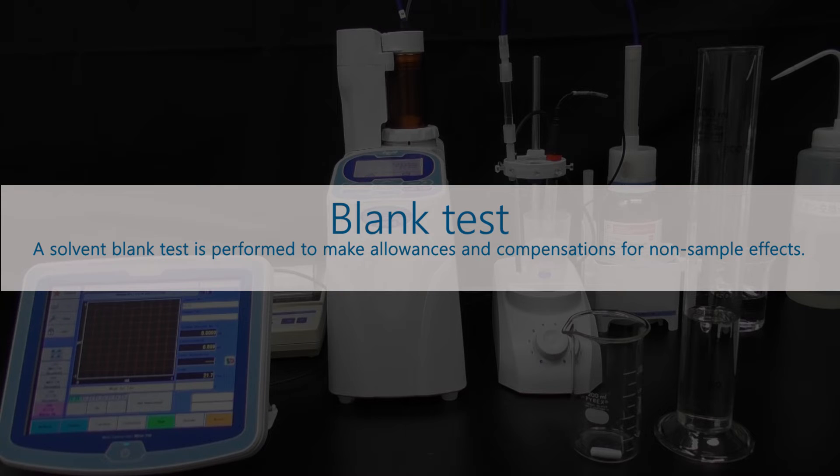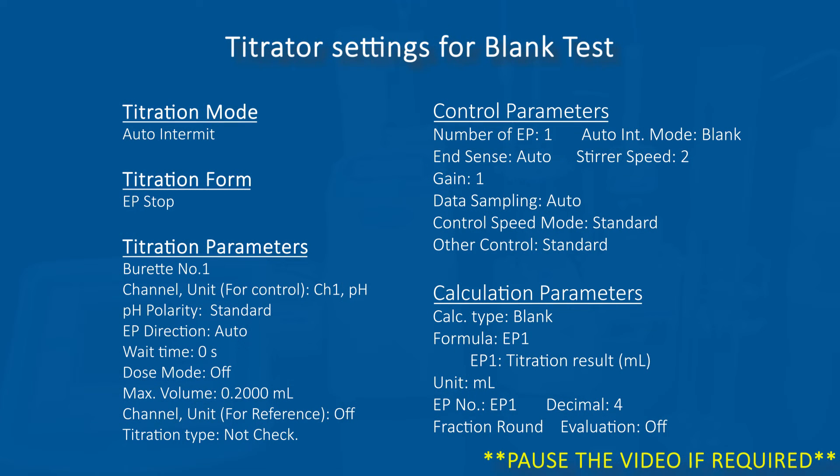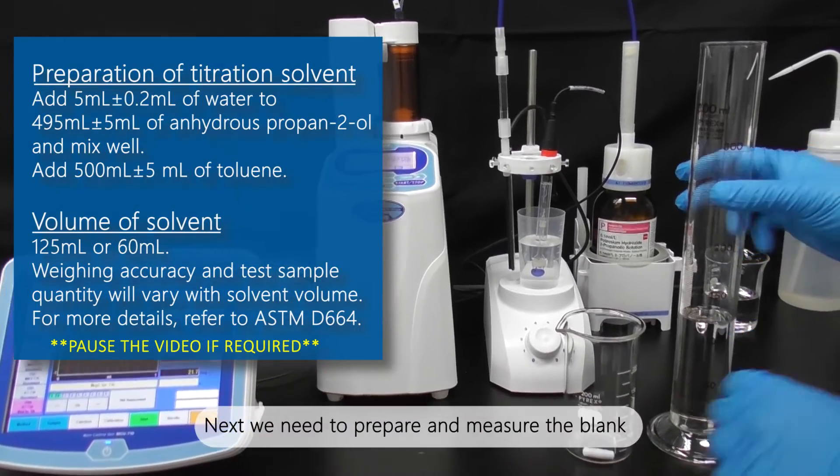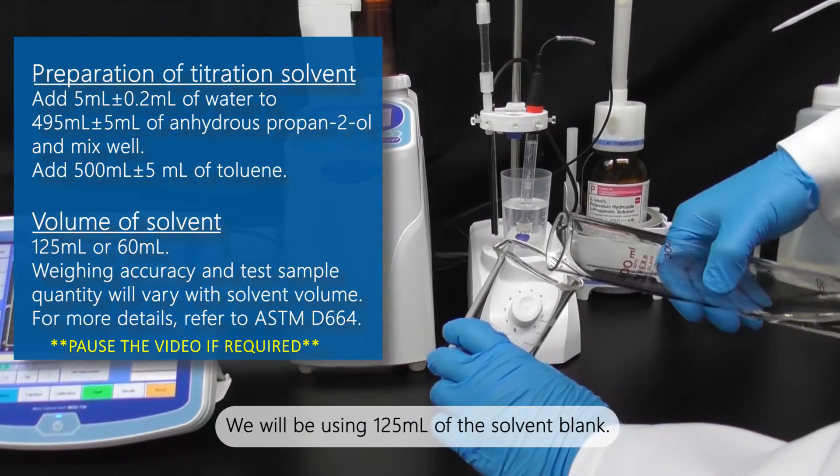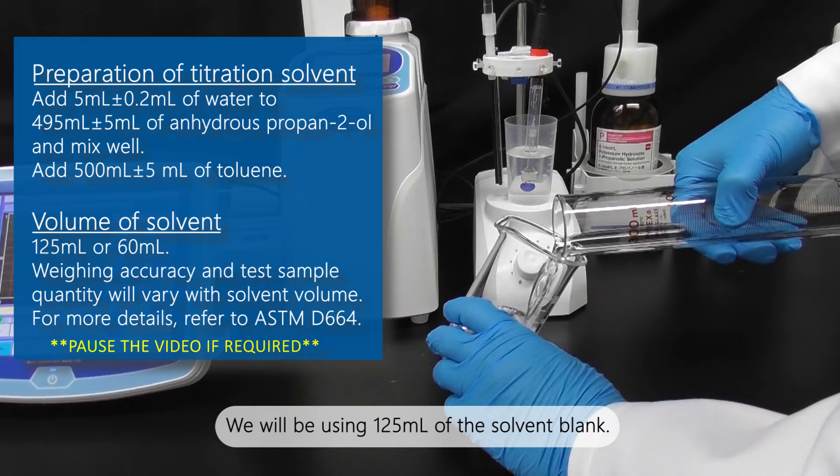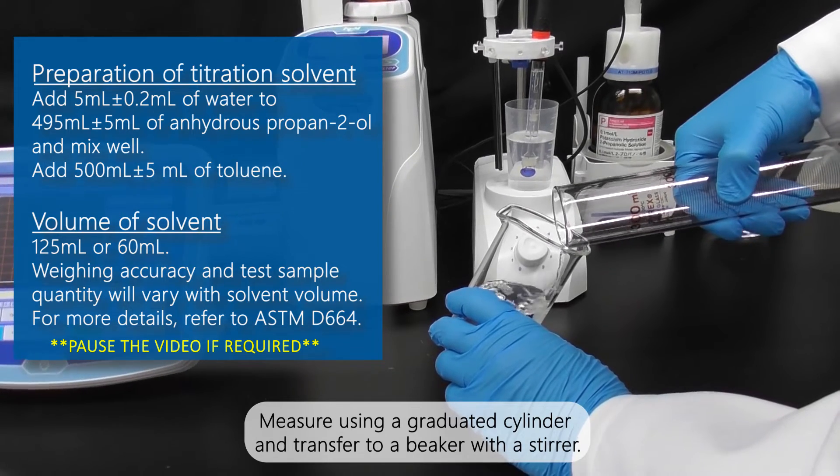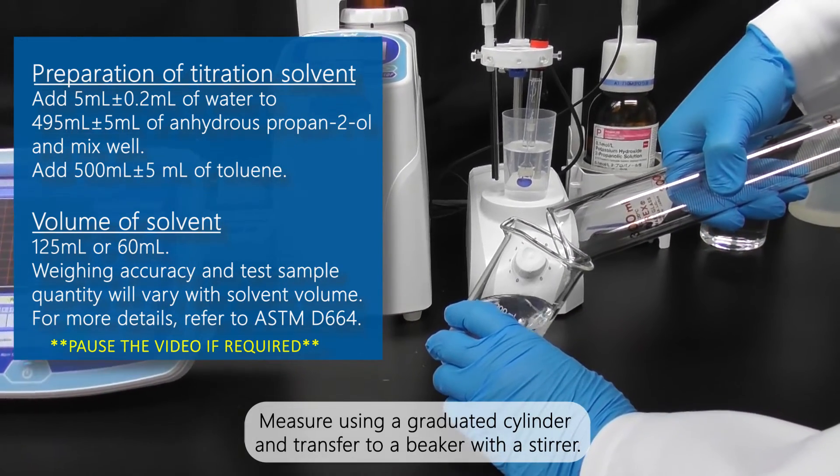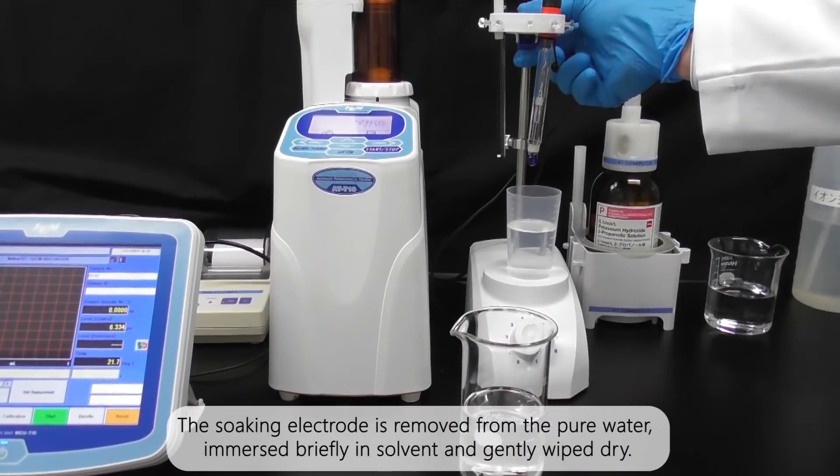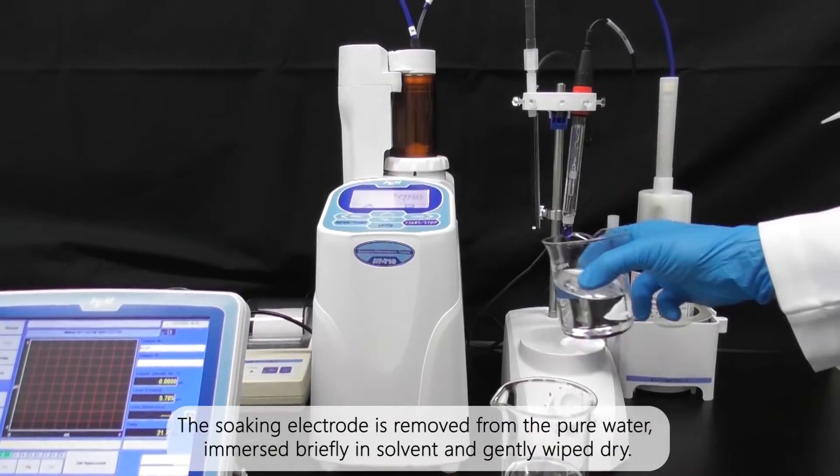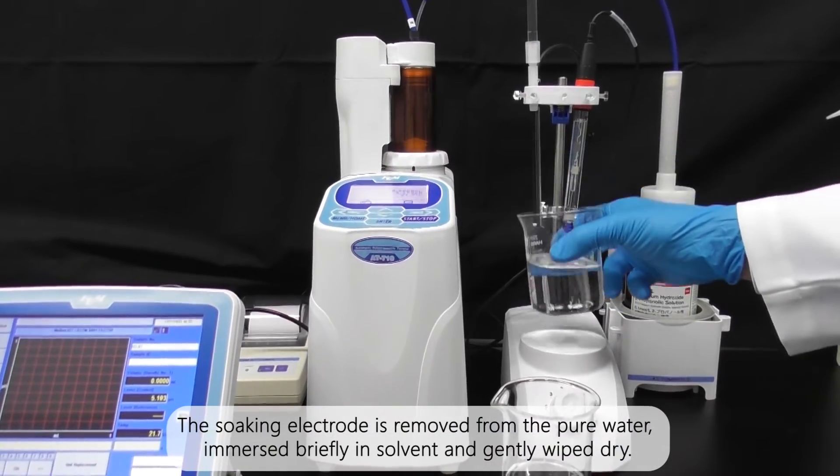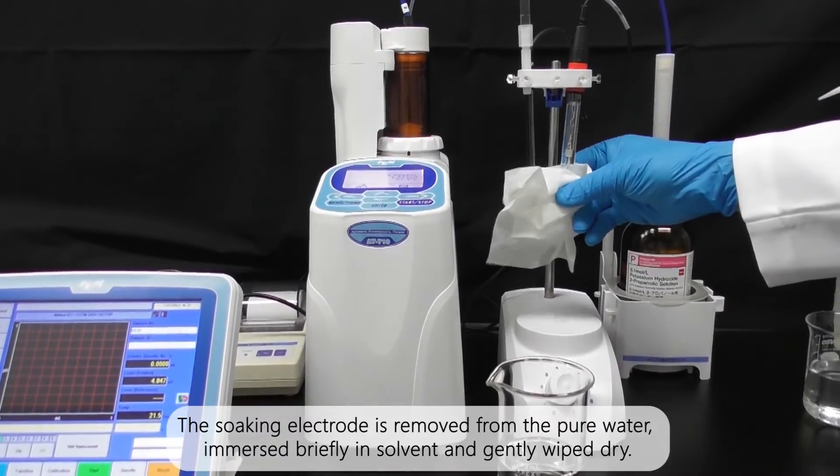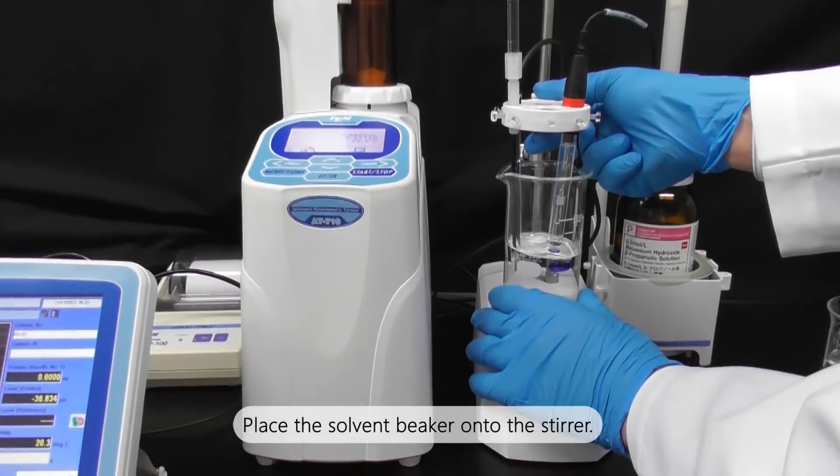Blank test: Next, we need to prepare and measure the blank. We will be using 125 mL of the solvent blank. Measure using a graduated cylinder and transfer to a beaker with a stirrer. The soaking electrode is removed from the pure water, immersed briefly in solvent and gently wiped dry. Place the solvent beaker onto the stirrer.